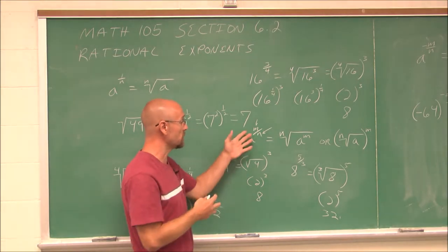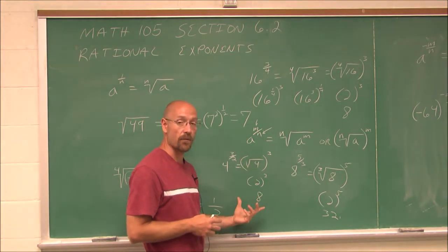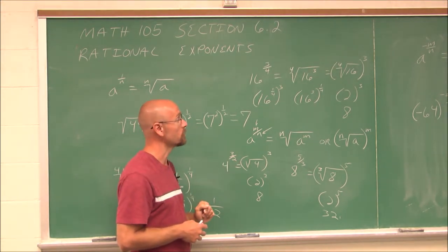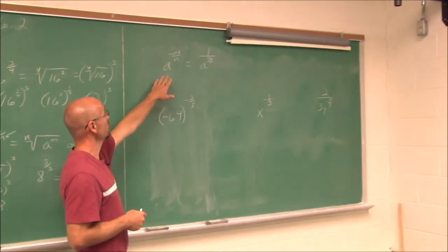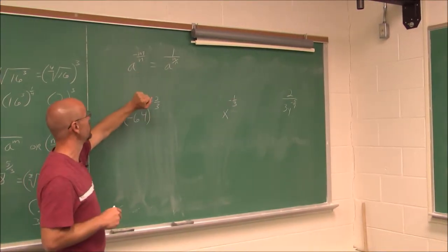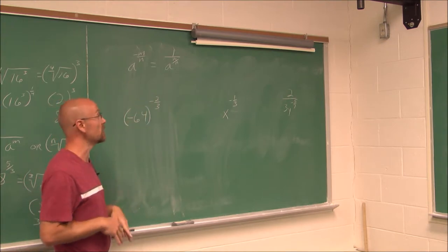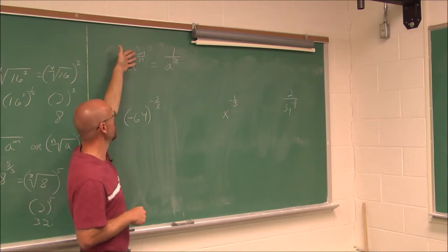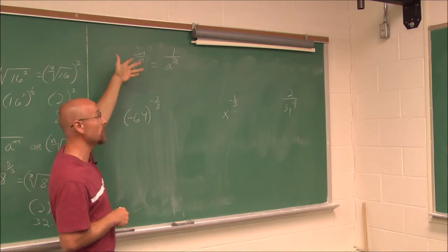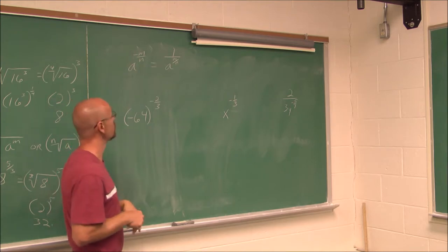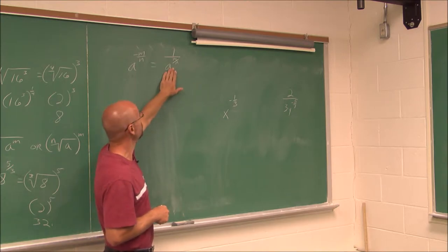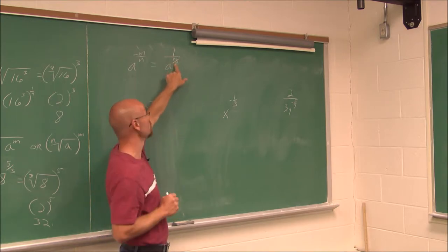So we can see and use these rules to simplify radicals or rational exponents. Let's look at another rule from our rules of exponents. If we have a to the negative m over n, that's a negative rational exponent. Negative exponents mean we can take its reciprocal — that's one of our rules of exponents — which would be 1 over a to the m over n. Then we can simplify using the rules we just looked at.